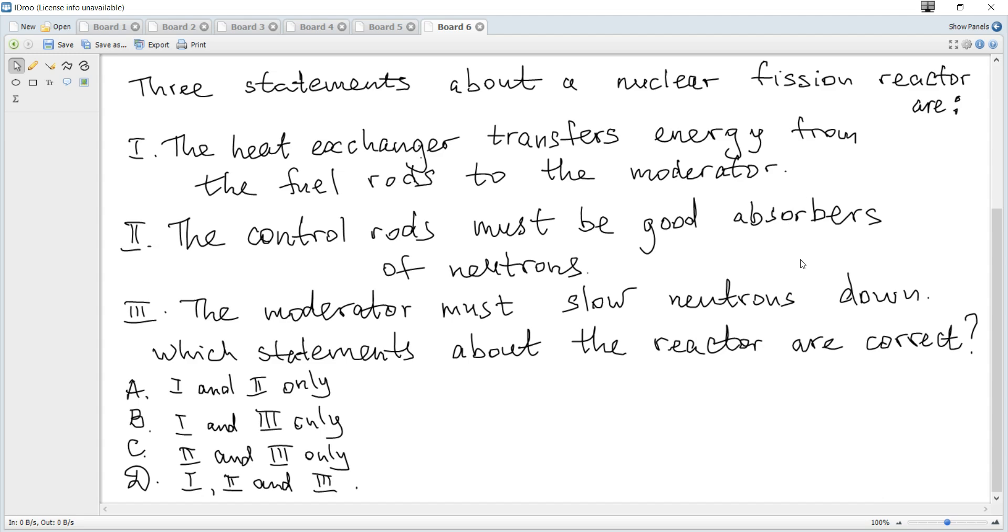Three statements about a nuclear fission reactor are: first, the heat exchanger transfers energy from the fuel rods to the moderator; second, the control rods must be good absorbers of neutrons; and third, the moderator must slow neutrons down. Which statements about the reactor are correct?